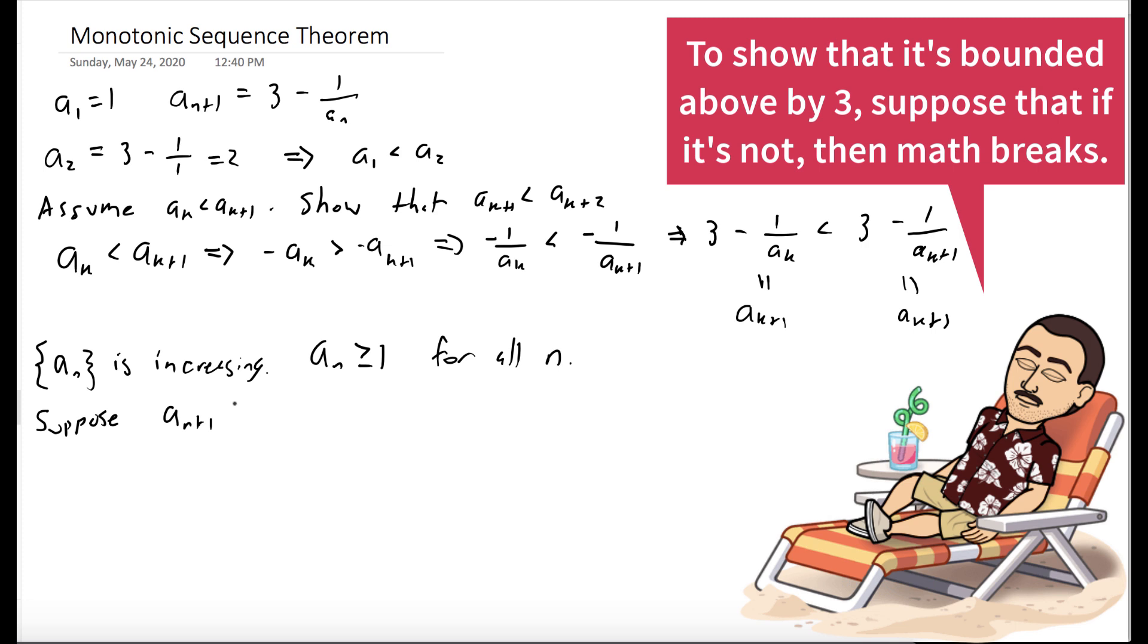And the way we're going to show it's bounded above by 3, which was given to us in the question, is we're going to do a proof by contradiction. So we'll suppose that a_{n+1} is greater than 3. Well, that means that 3 minus 1 over a_n must be greater than 3.